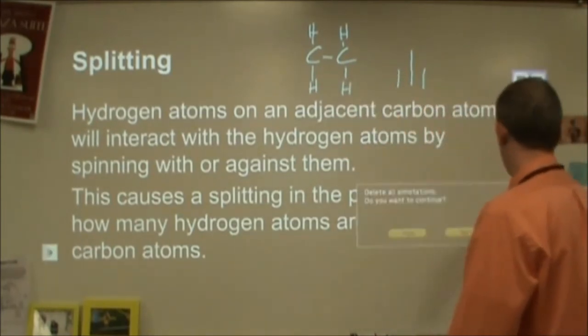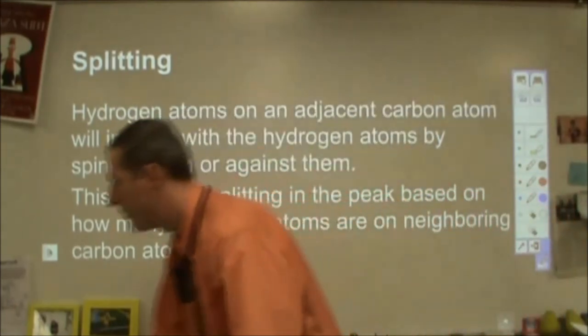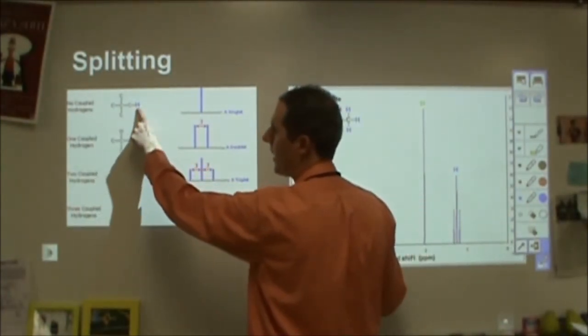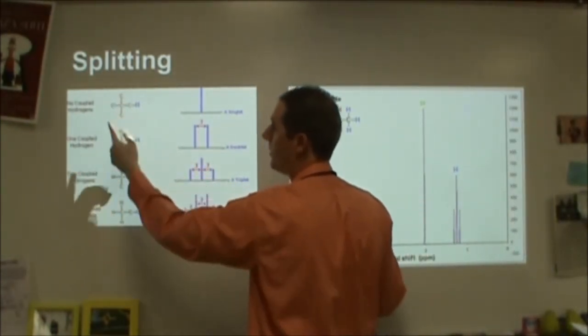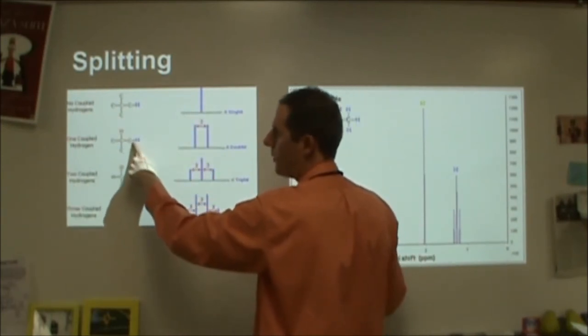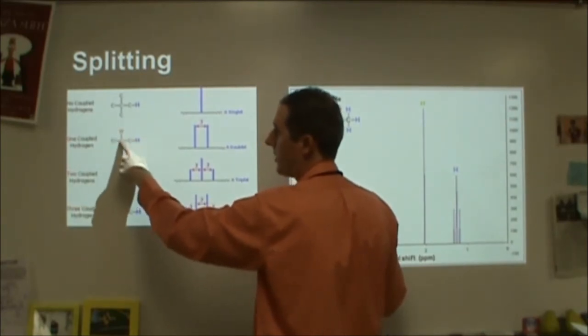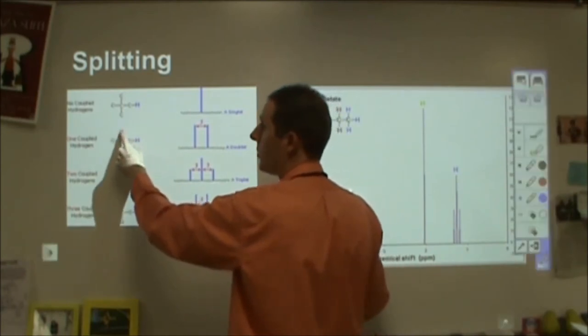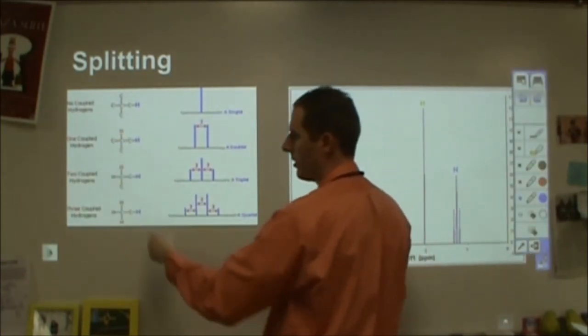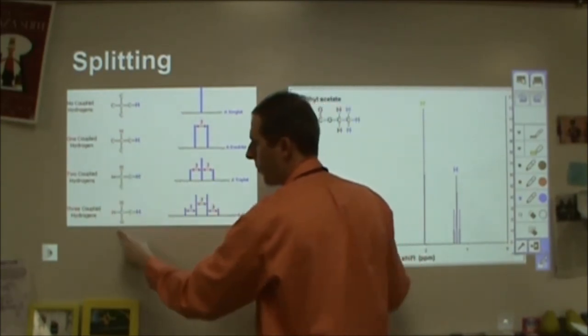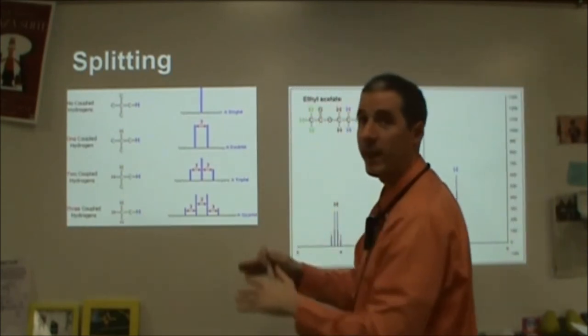And so the number of peaks you get will be equal to how many hydrogens are on the neighboring carbons. And there's a really good image of that right here. So this carbon has a hydrogen attached, and then the next carbon has no hydrogens attached, so it would just be a single peak. Here I have one hydrogen attached here and then one hydrogen attached on the adjacent carbon. So this can either be with or against the field, and it's going to cause a split. So now you're going to see what's called a doublet. You're going to see two peaks. It's always one more than the number of hydrogens on the adjacent carbons. Here I've got two hydrogens on an adjacent carbon, it'll split into three peaks. Here I've got three hydrogens, it'll split into four peaks. Now you might think it ends there. It does not.